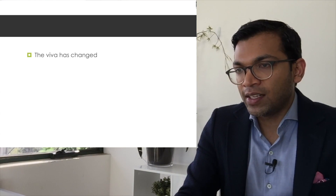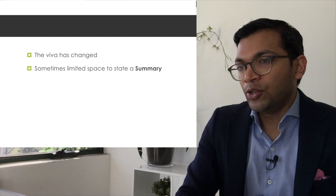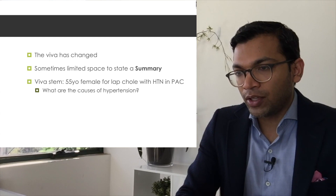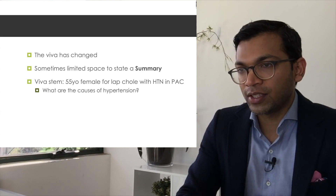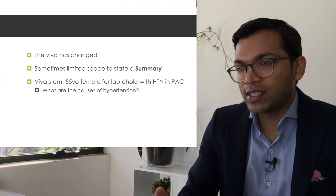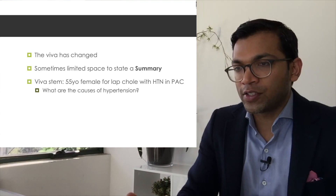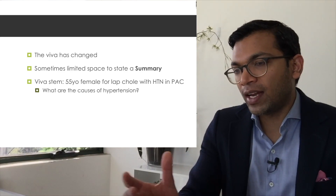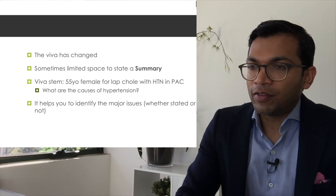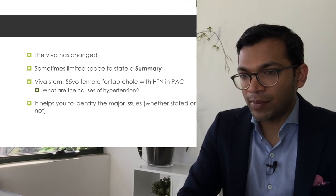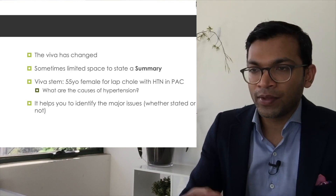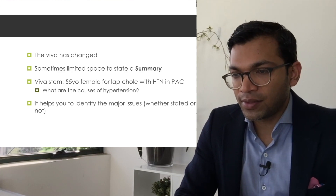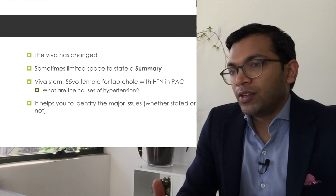There's now very little space to state a summary statement at the start of your viva. You'll get a very specific stem — for example, '55-year-old female for a lap chole with hypertension in the pre-admission clinic, what are the causes of hypertension?' It would be illogical to start with a summary statement when there's a direct question. That said, I still think there's value in it — in those first couple of minutes of pre-reading, I write out the summary statement to identify and prime my brain to think about the major issues.